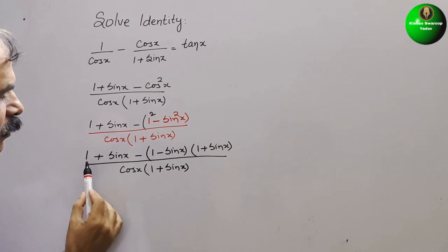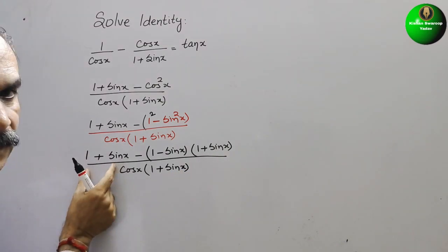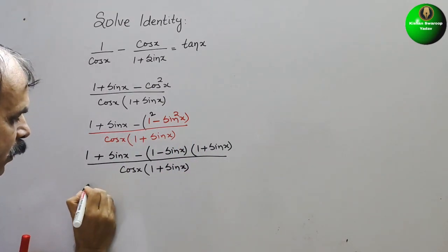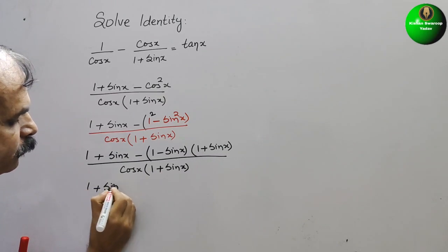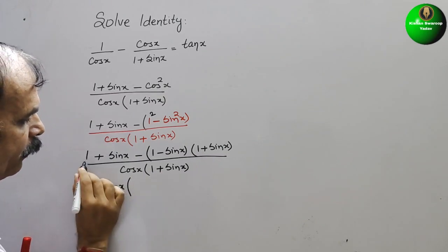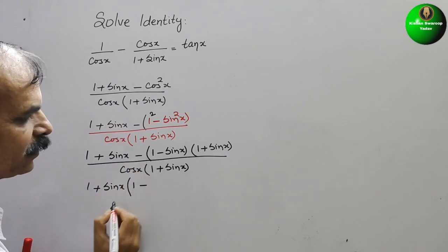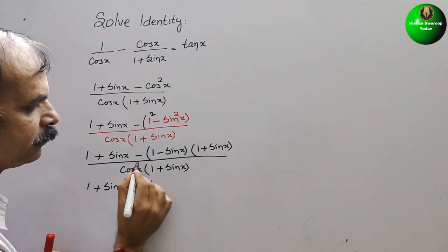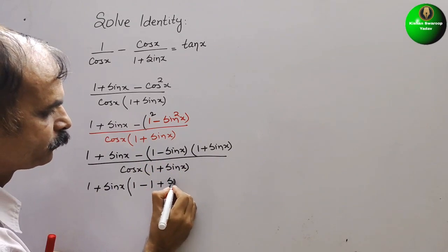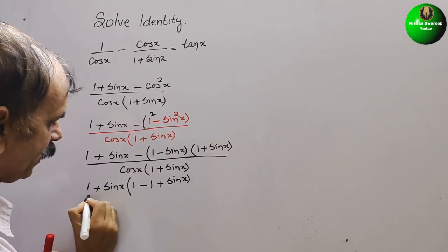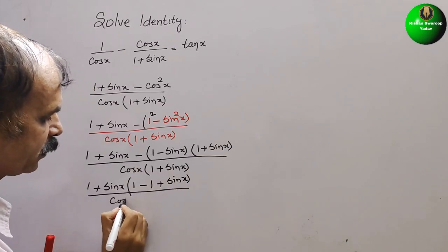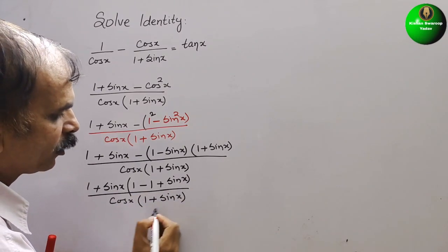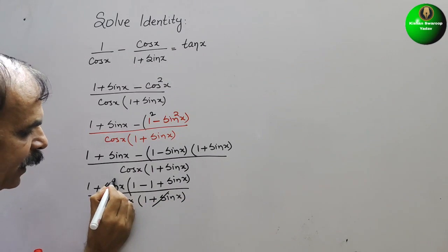Now we can see that (1 + sin x) is common in both terms in the numerator, so we take it out. The numerator becomes (1 + sin x) times (1 - (1 - sin x)), which simplifies as (1 + sin x) cancels with the denominator's (1 + sin x).